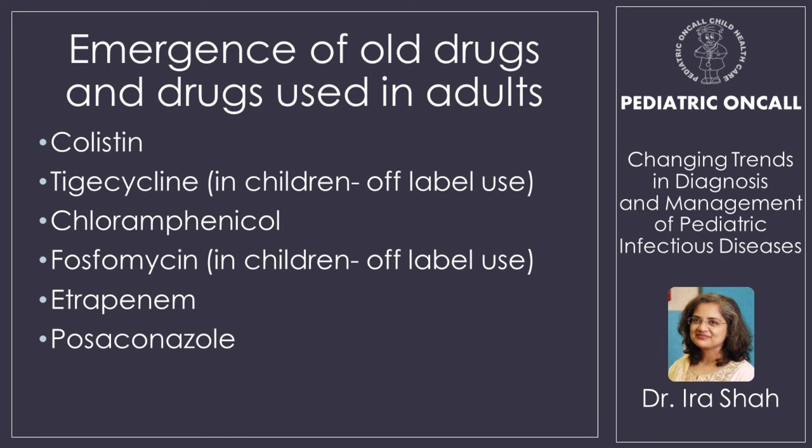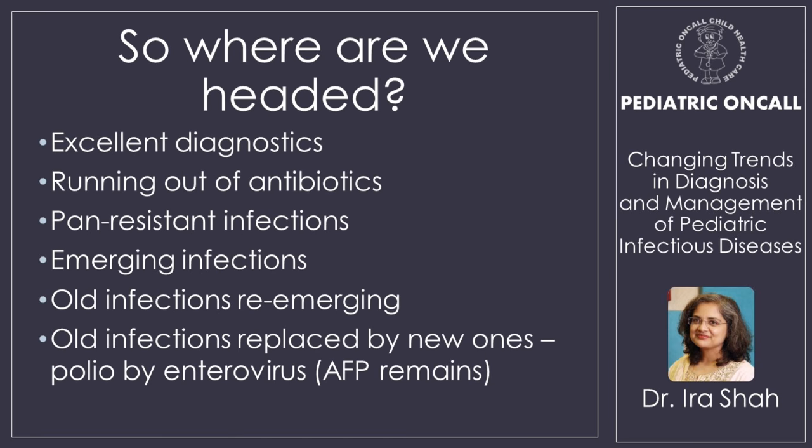We don't have new drugs, so we come up with old drugs used off-label — colistin, doxycycline in neonates, chloramphenicol, fosfomycin, aztreonam, piperacillin-tazobactam, which we actually don't normally use in children. We started using them. So where are we headed with infectious diseases? Excellent diagnosis, but we are running out of antibiotics.